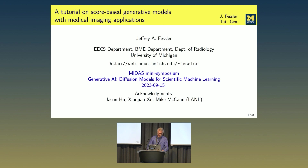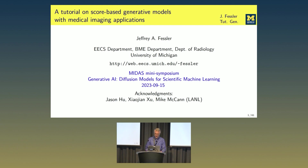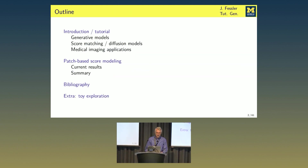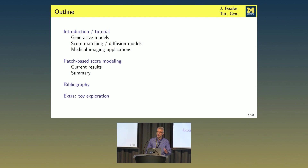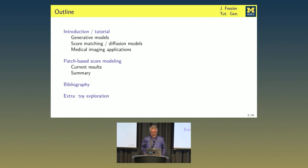I'd like to acknowledge my PhD student Jason Hu, postdoc Xiaojian Xu, and collaborator Mike McCann, who have influenced my thinking on this topic. I'm going to start out with a high-level tutorial, talk about generative models in general, and then specifically score-matching diffusion models, focusing on medical imaging applications, even though I know this is a science and engineering-themed day. And then if there's time, I'll talk about some work from our group on patch-based score modeling.